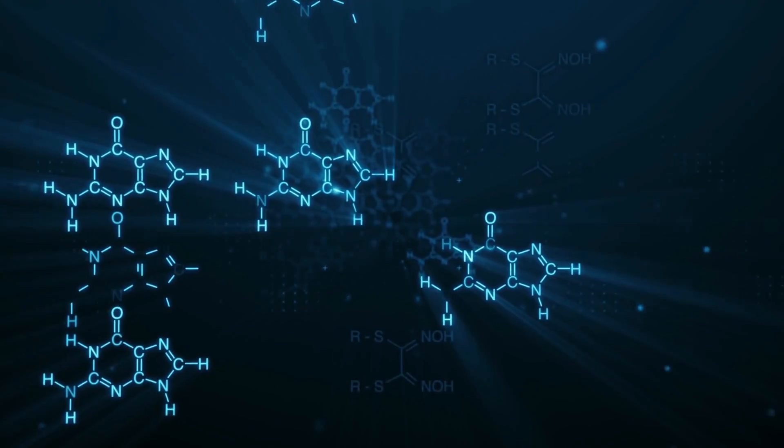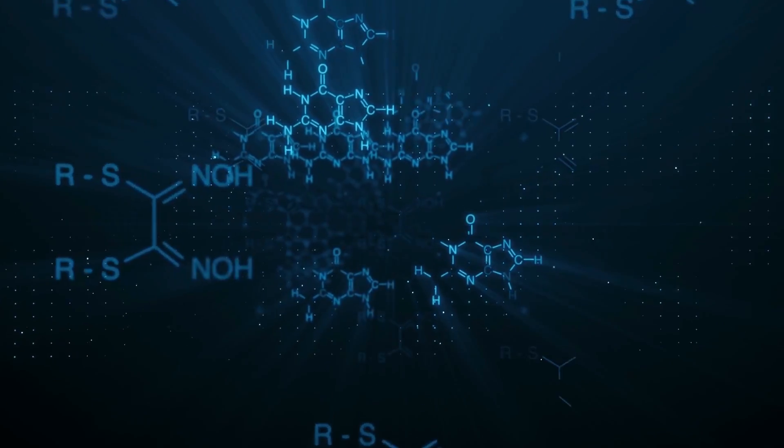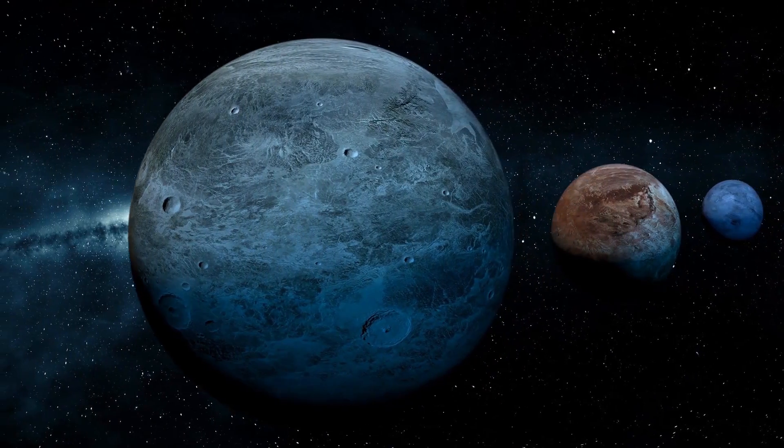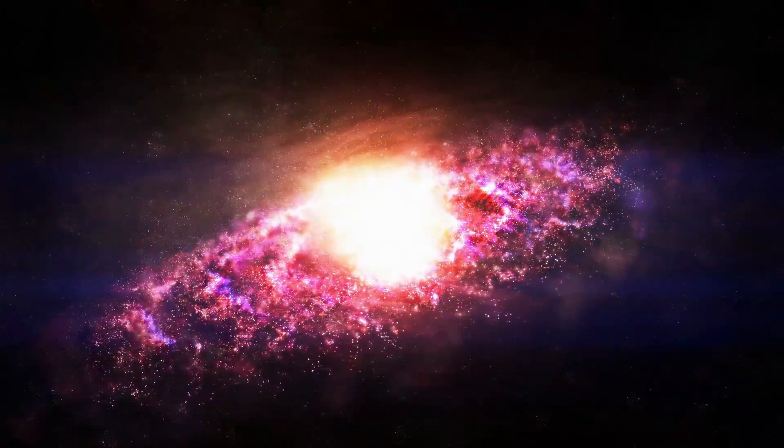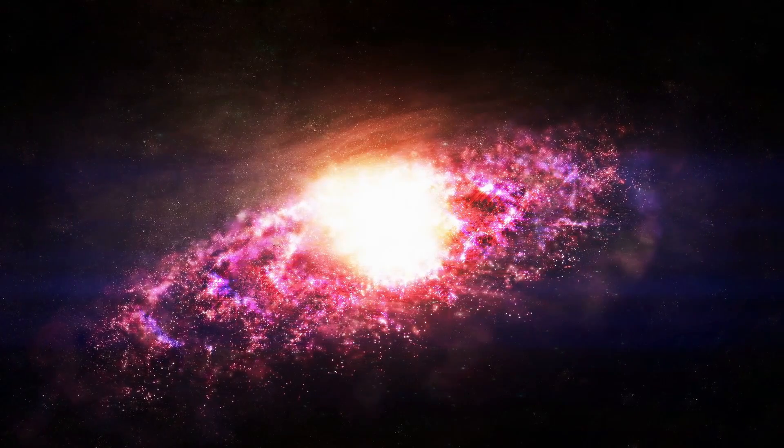Supernovae scatter these new exotic elements into the cosmos, where they will eventually become the building blocks of new stars and new planets. Since the very first stars formed after the Big Bang, every supernova adds a little more of these heavy elements to the universe.